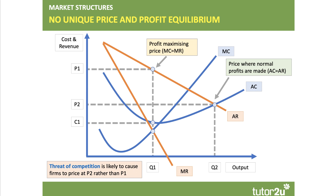Here's our diagram from the last video. There's no unique price and profit equilibrium in a contestable market. Due to freedom of entry and exit — in other words, the absence of sunk costs — existing firms always face the threat of new firms and new products entering the market. We call that hit and run entry. The threat of entry may be sufficient to keep prices close to a competitive equilibrium and therefore eliminate monopoly profits.